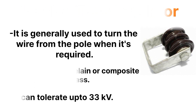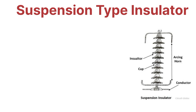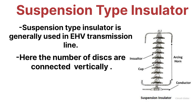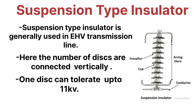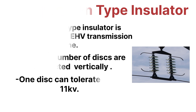The next type is the suspension type insulator, which is used in transmission lines, particularly for extra high voltage lines. A number of discs are connected vertically for the transmission line, and one disc can tolerate up to 11 kV. You can recognize these in overhead transmission lines where discs are connected vertically to the tower.